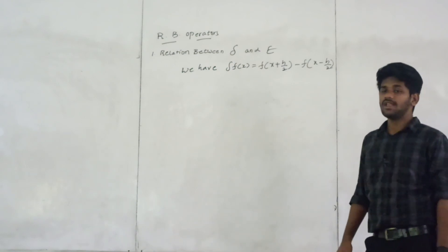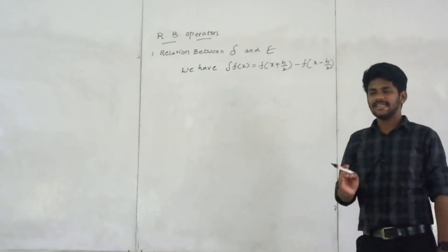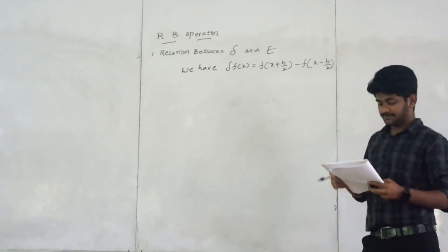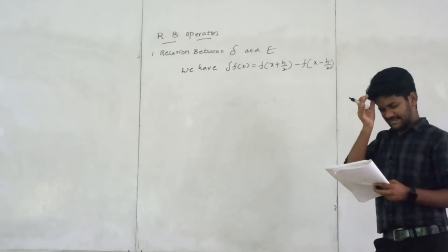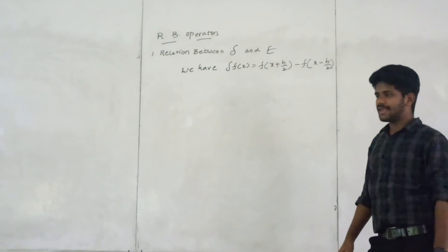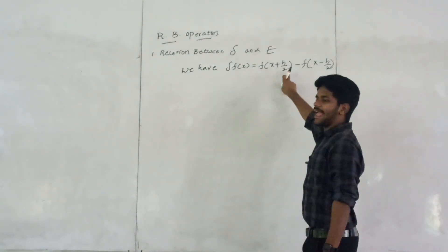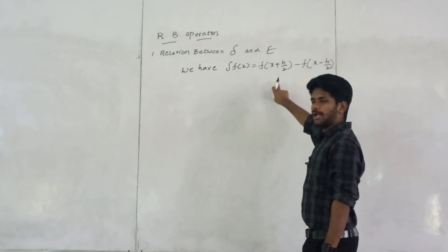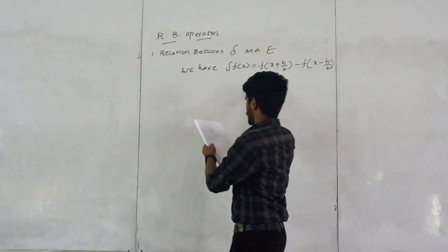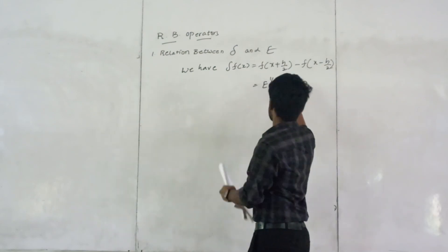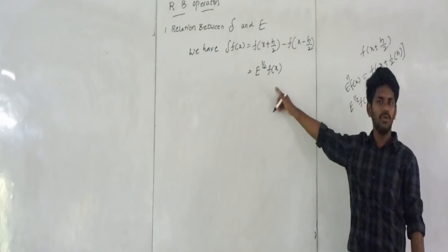Delta f of x is equal to f of x. Now, e to the power of 1 by 2 f of x — how much is it? It is e to the power of f of x. The formula for e to the power of n f of x, children.